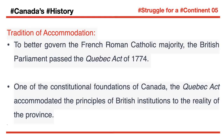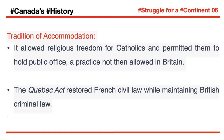To better govern the French Roman Catholic majority, the British Parliament passed the Quebec Act of 1774 — one of the constitutional foundations of Canada. The Quebec Act accommodated the principles of British institutions to the reality of the province. It allowed religious freedom for Catholics and permitted them to hold public office, a practice not then allowed in Britain. The Quebec Act restored French civil law while maintaining British criminal law.